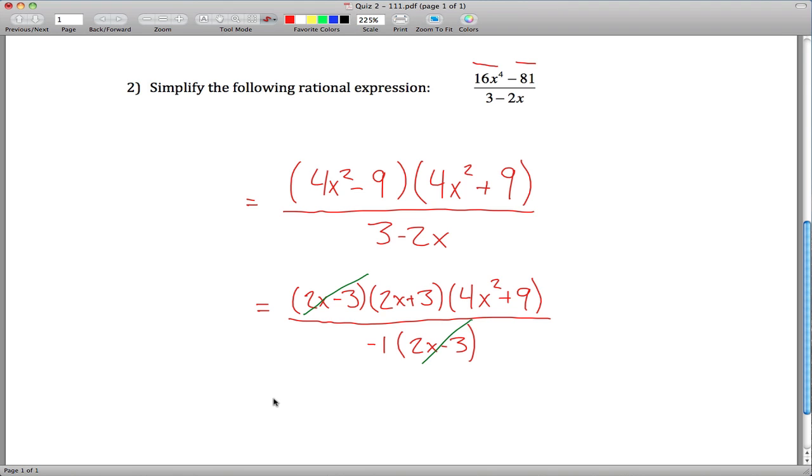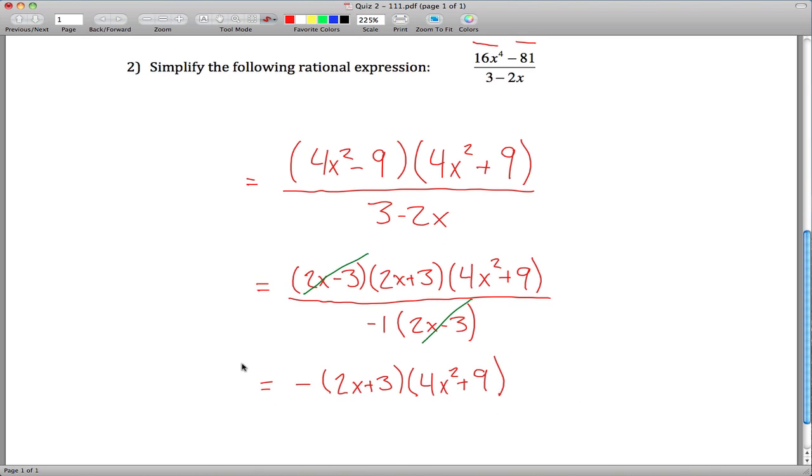And so what we got left is this times this divided by negative 1, or you can move that negative up to the top. So negative 2x plus 3 times 4x squared plus 9 divided by 1, which you don't even have to write divided by 1, so we can just stop right here and call this the answer. And that's the end of quiz 2.